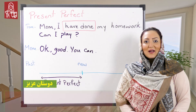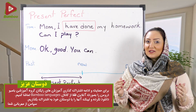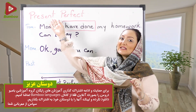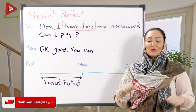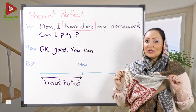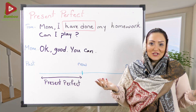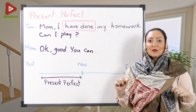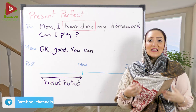همونطور که گفتم، امروز میخوام در مورد present perfect tense صحبت کنم. Present perfect یعنی چی؟ ترجمه‌اش «حال کامل» هست، اما برخلاف اسمش که present هست، خیلی مرتبط با زمان حال نیست و در واقع به نوعی گذشته هست. در فارسی معادل ماضی نقلی هست.